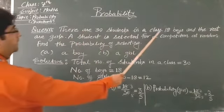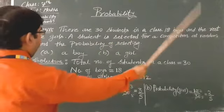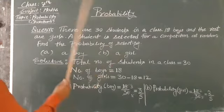There are 30 students in a class, 18 boys and the rest are girls. A student is selected for a competition at random. Find the probability of selecting a boy and a girl.